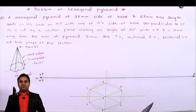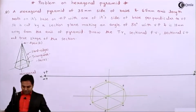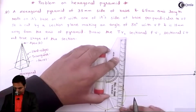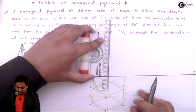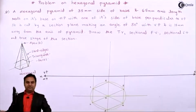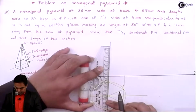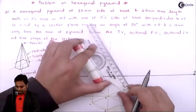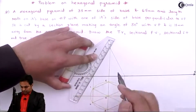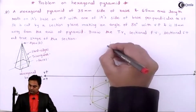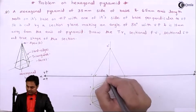After getting the top view of this hexagonal pyramid, I'll project the front view. All the points need to be projected upwards. The axis height is 65 mm, so measuring 65 mm. Here is the apex O dash, then points 1 dash, 2 dash, 3 dash, 6 dash, and 4 dash comma 5 dash.